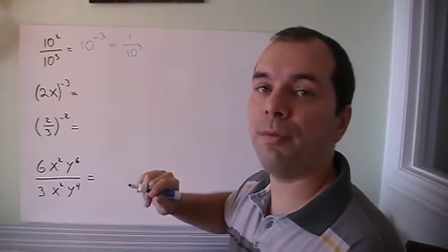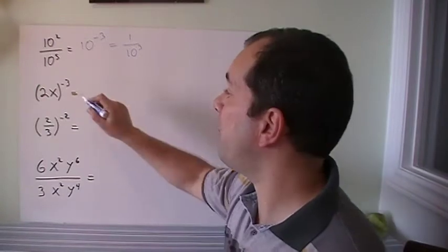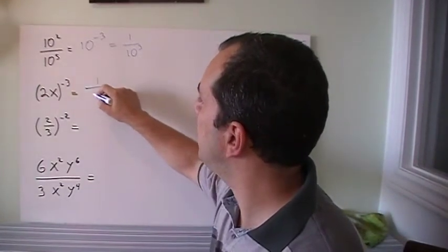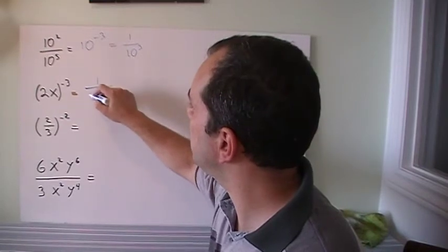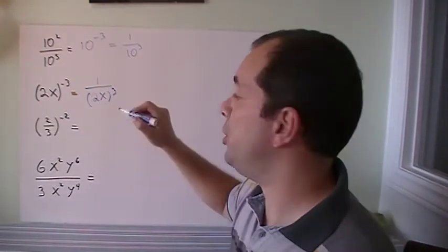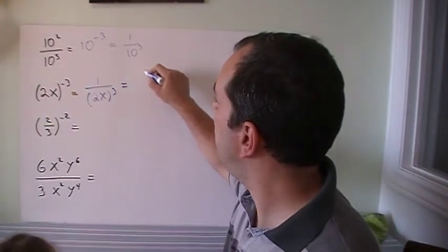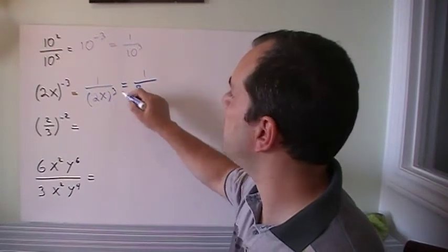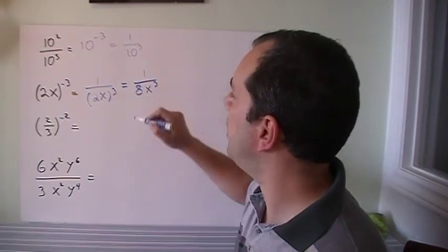2x to the negative 3. Both things are going to be to the negative 3. So if I use that minus sign, this is the same as 1 over 2x to the power of 3. And now I can continue one more step. That's 1 over, 2 to the power of 3 is 8, x to the power of 3 is x cubed.